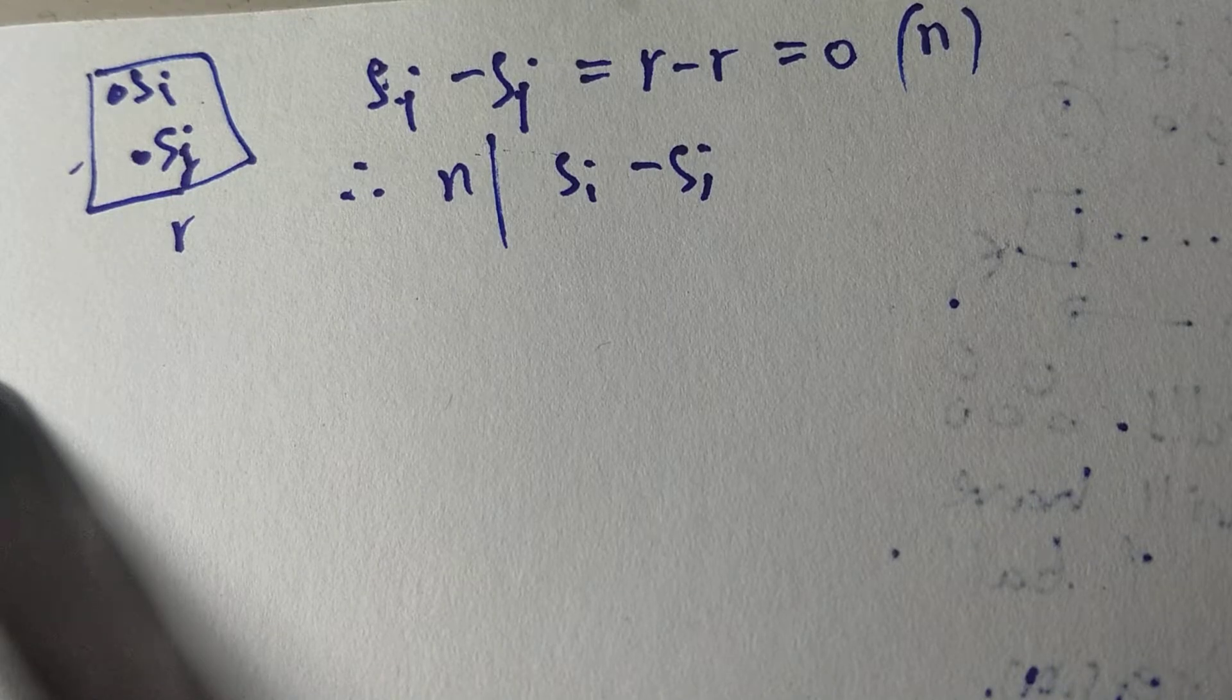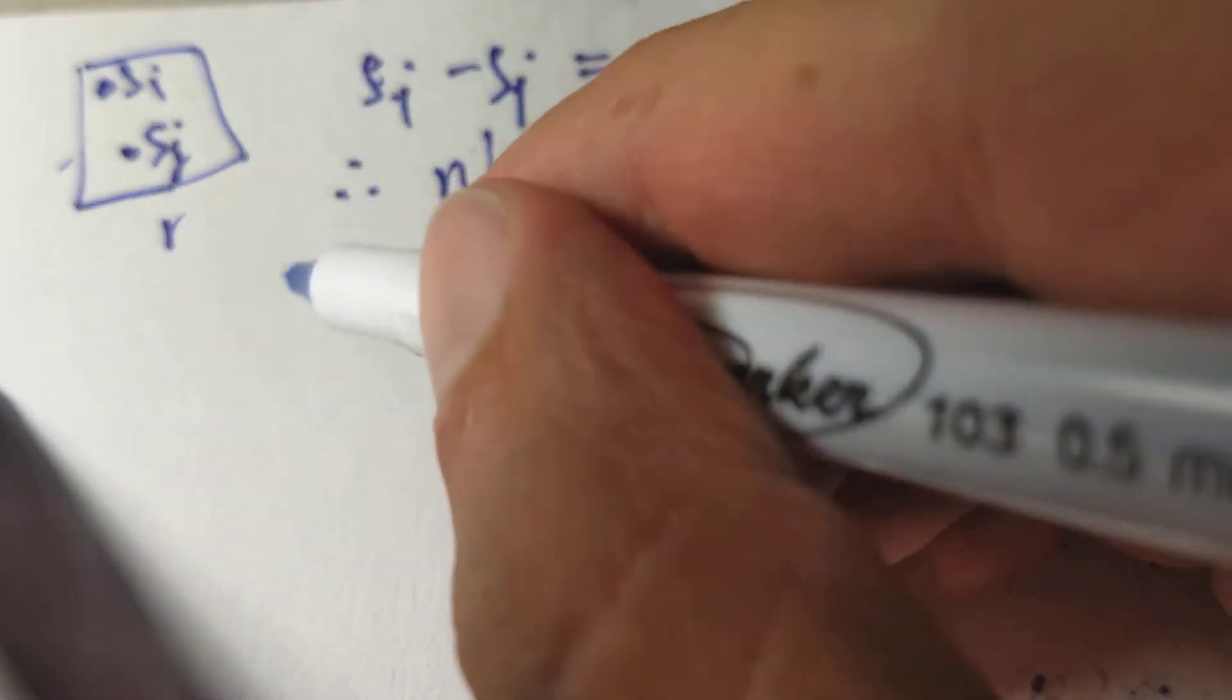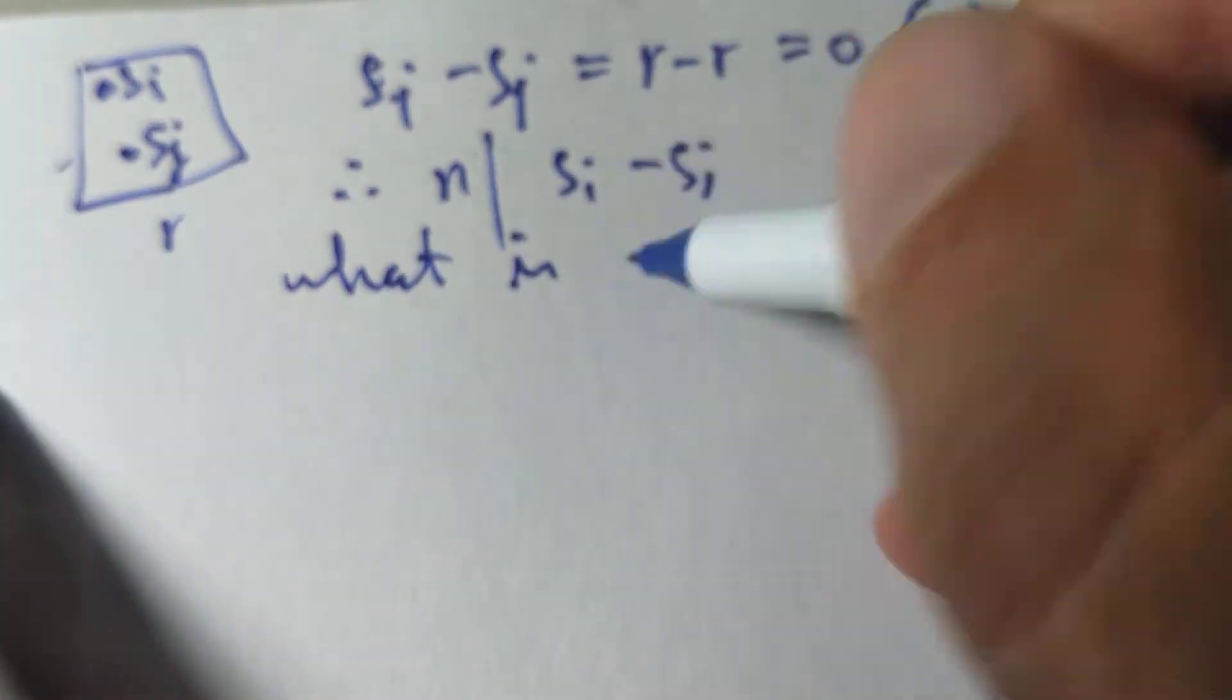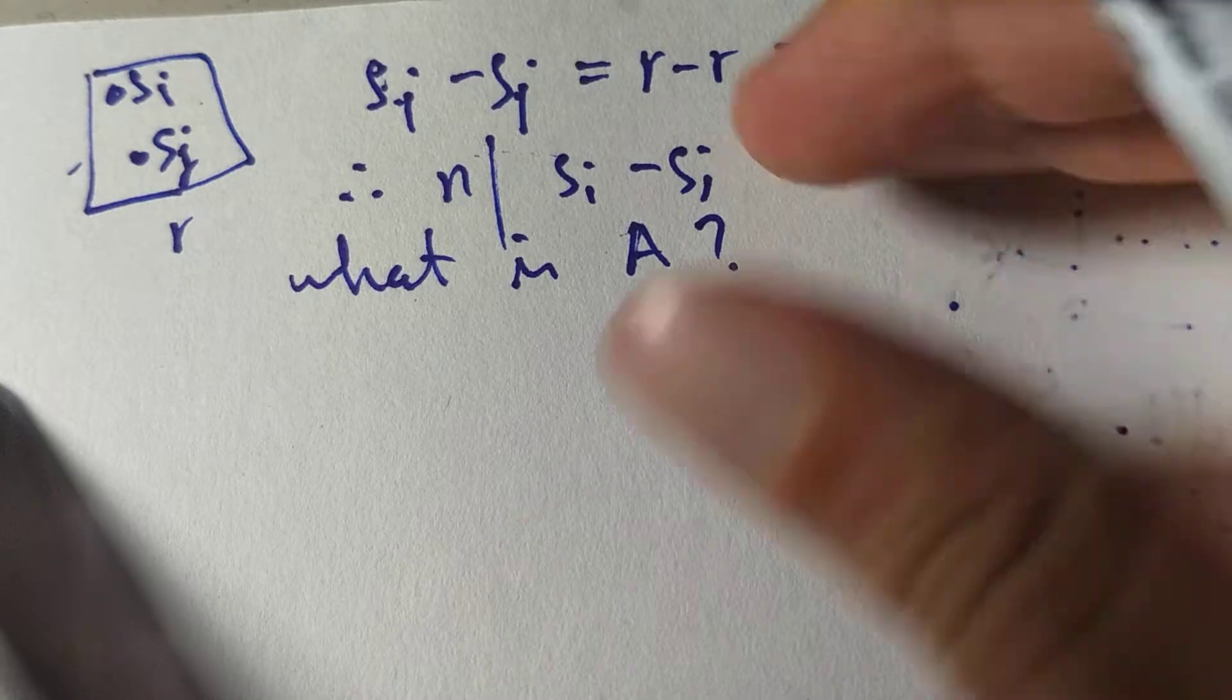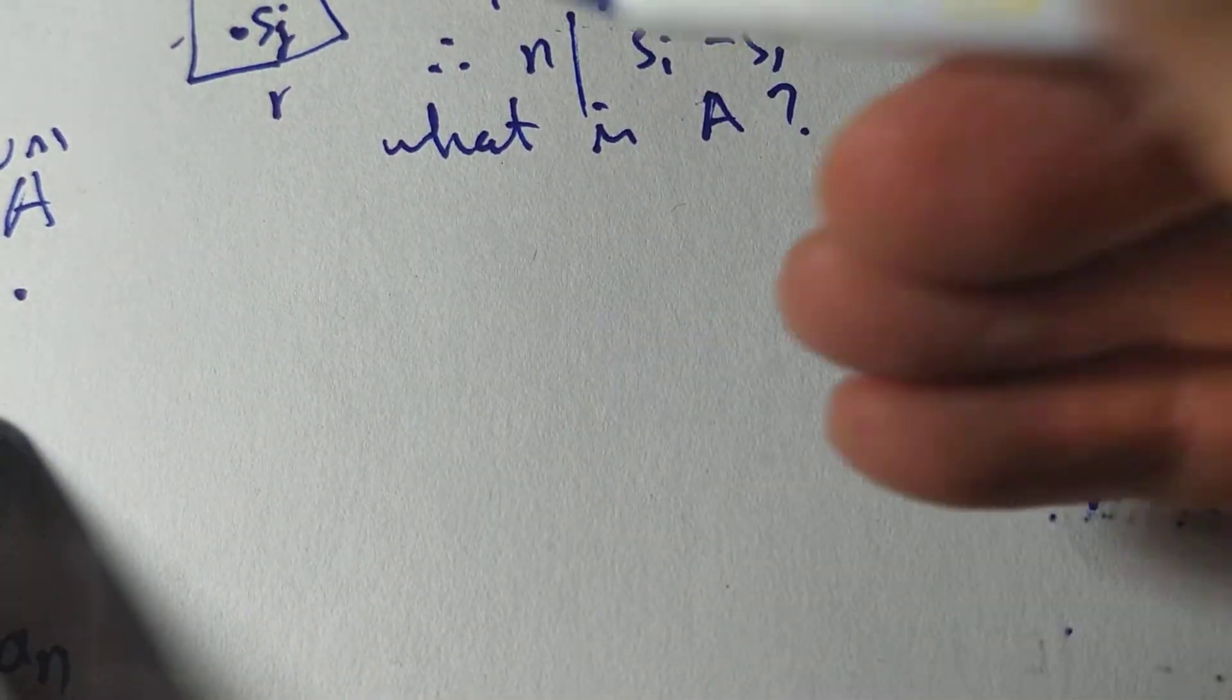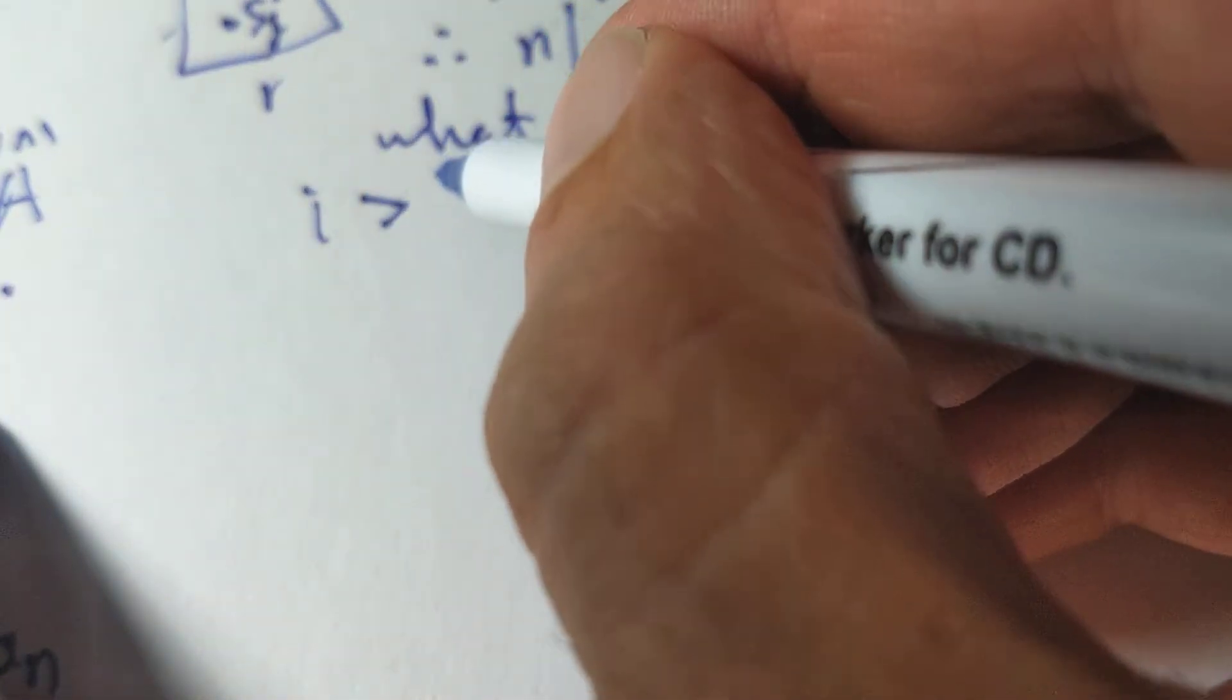Okay, so we know our subset exists. Let's construct it. What is A now? It's something to do with this. We know it exists, but let's now try to be more explicit. What is A? Well, let's take I bigger than J.